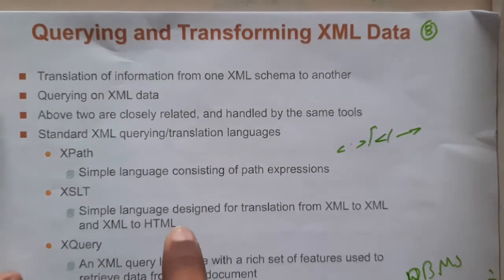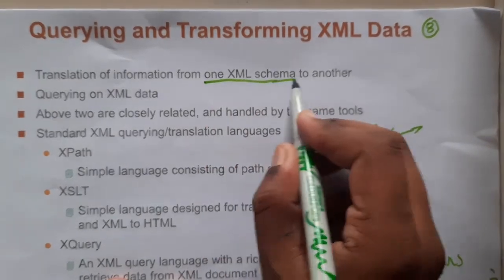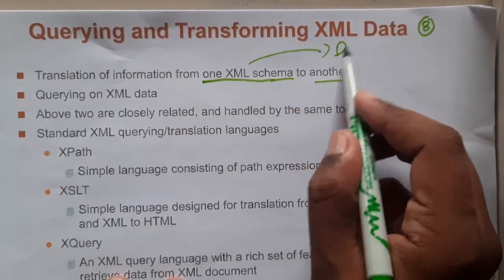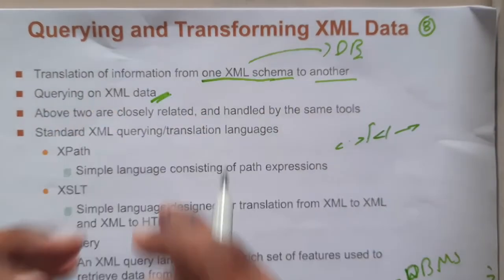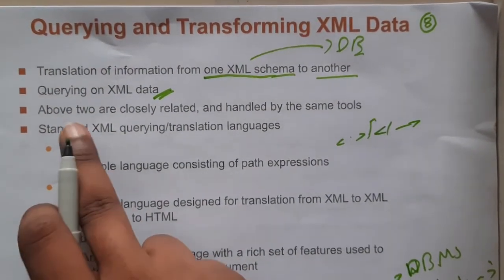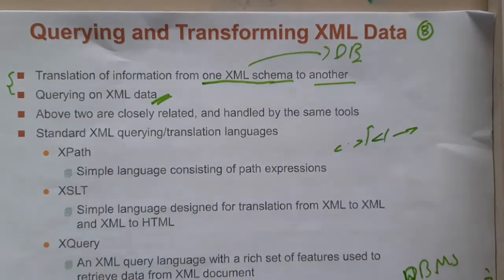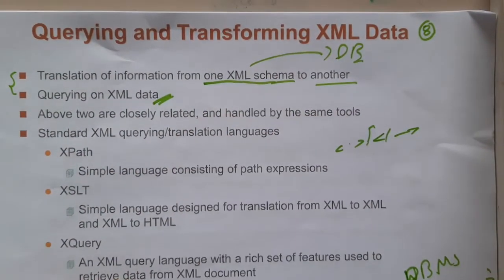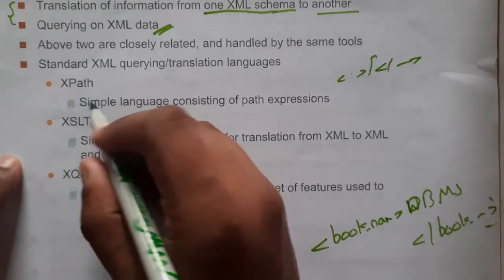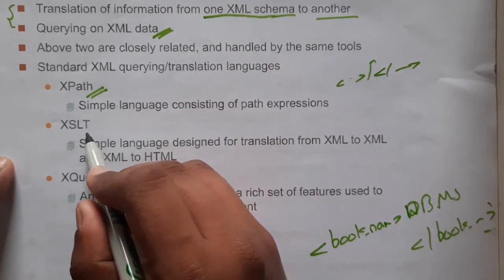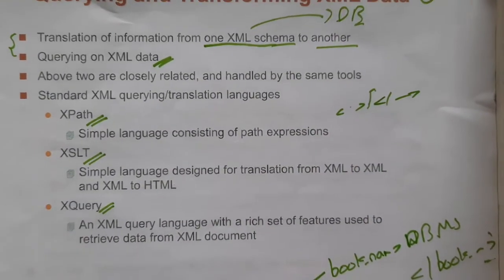This whole process is a translation of information from one XML schema to another — transferring data from an XML schema to a database or anywhere. Querying on XML data is simply the process of retrieving data from XML. These two tasks — converting between schemas and querying XML — are closely related and handled by the same tools. The three major methods are: XPath, XSLT, and XQuery.